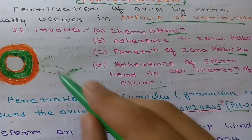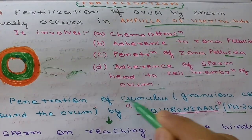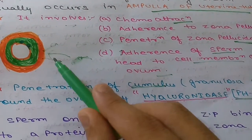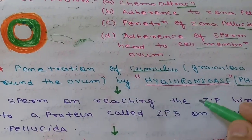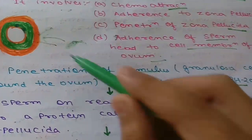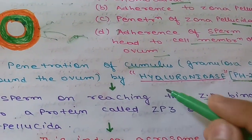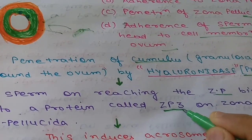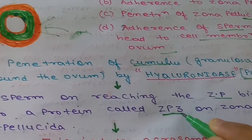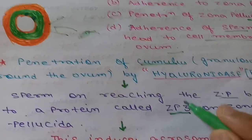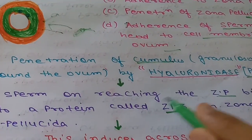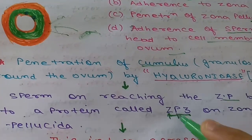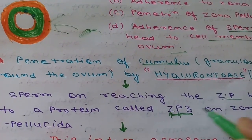This hyaluronidase enzyme penetrates the granulosa cells, and this layer of granulosa cells is also called the cumulus. After penetrating the granulosa cells, the sperm reaches the zona pellucida and binds to proteins known as ZP3 — ZP3 is a receptor present on the zona pellucida.